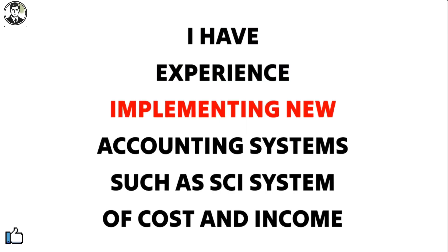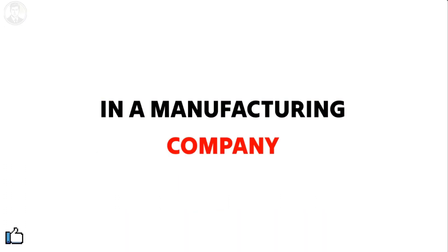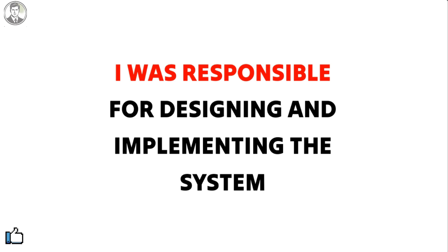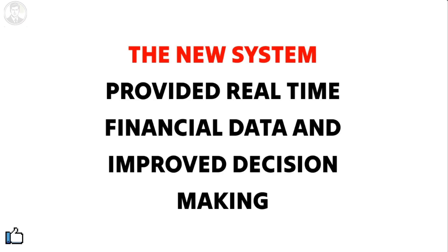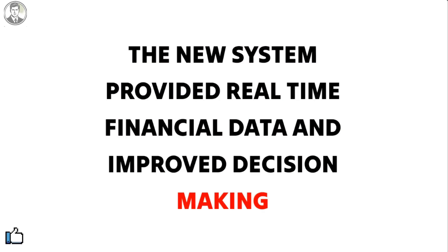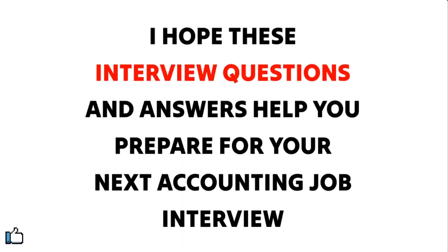Question six: Can you describe your experience implementing new accounting systems and processes? Sample answer: I have experience implementing new accounting systems, such as a system of cost and income in a manufacturing company. I was responsible for designing and implementing the system, ensuring seamless integration with existing processes. The new system provided real-time financial data and improved decision-making, helping the company achieve its financial goals.